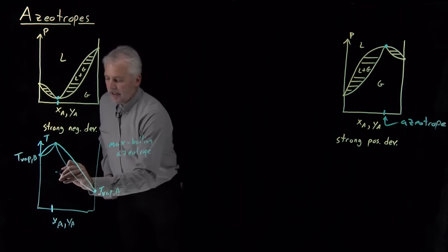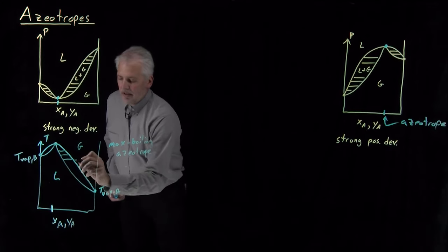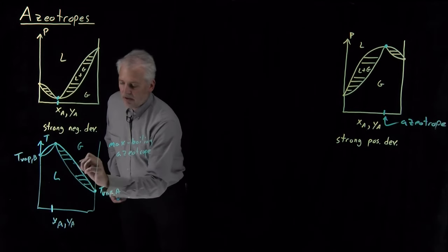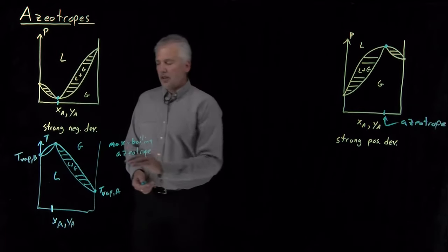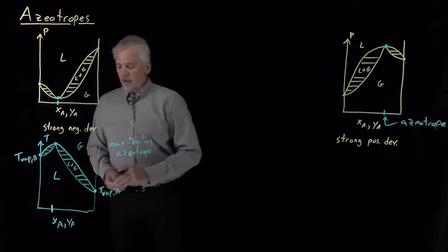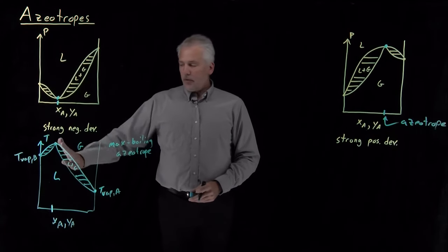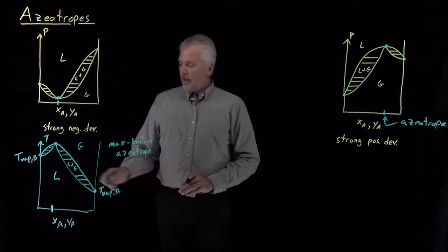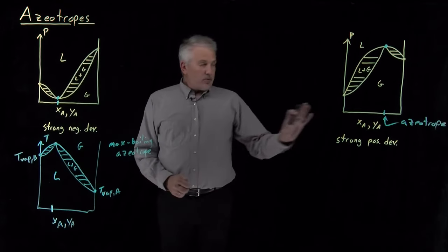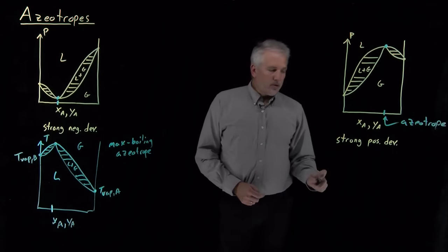It's a phase diagram, so at low temperatures we have a liquid, at high temperatures we have a gas, and we have tie lines in the phase coexistence region describing the liquid-gas coexistence regions — either for A-rich solutions consisting mostly of A, or for B-rich solutions consisting mostly of B. Everything is reversed in the case where we have strong positive deviations from Raoult's law.